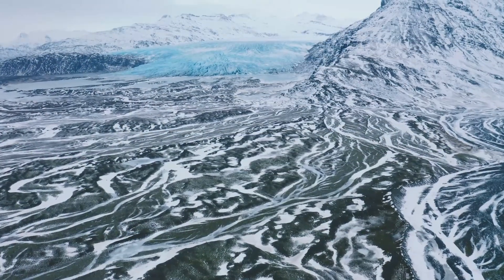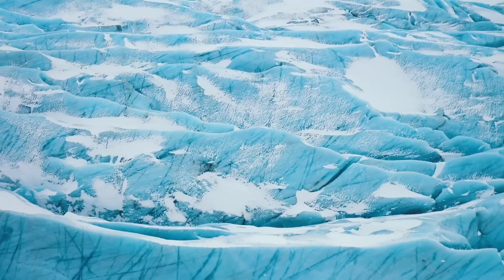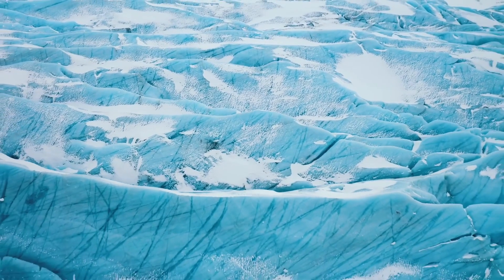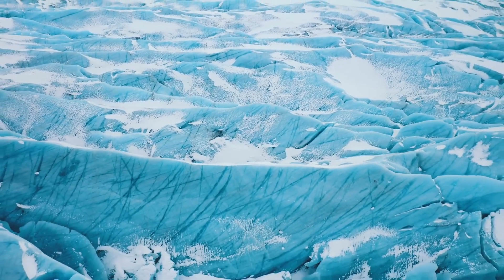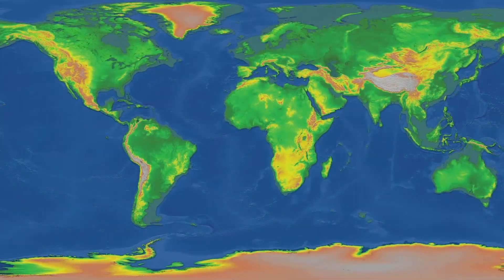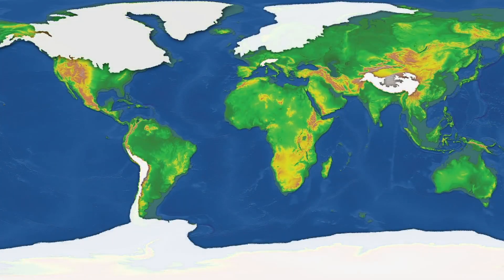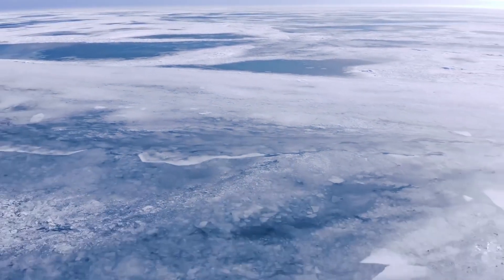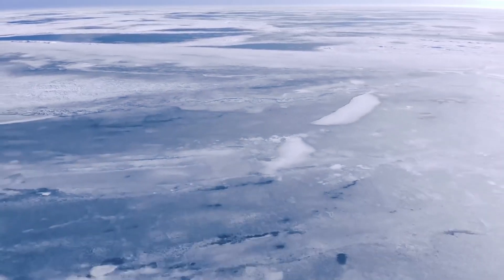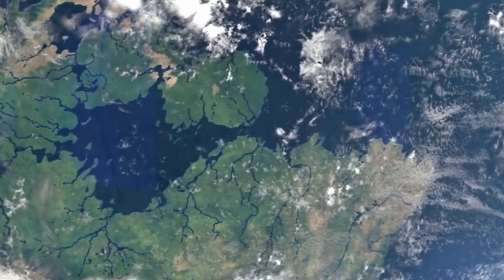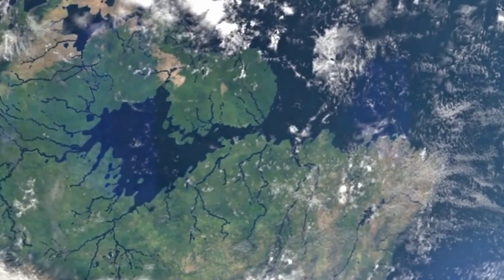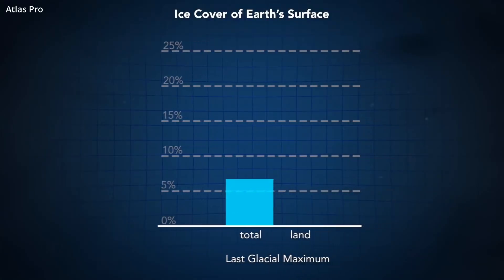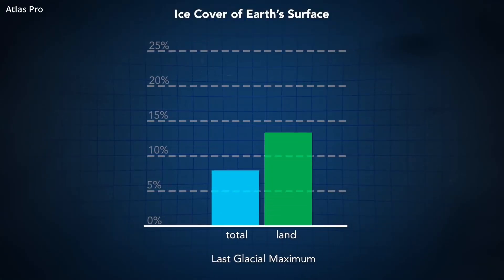The last glacial period began about 100,000 years ago, and the Ice Age peaked during the last glacial maximum about 20,000 years ago, when glaciers covered vast swathes of North America, Europe, South America, and Asia. At that time, global temperatures were about 6 degrees Celsius lower than they are today, and the global sea level was more than 400 feet lower than it is today.